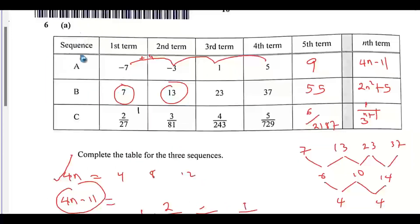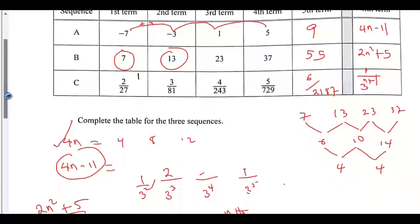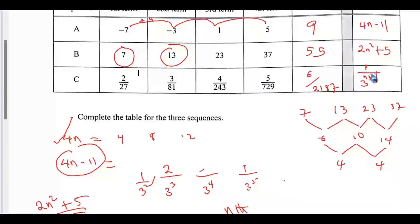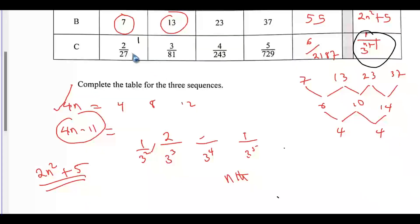Question 6A. We are giving three sequences: Sequence A, Sequence B and Sequence C respectively. The nth term is wrong here because I unconsciously changed the question. I had the first term to be 1 over 9, whereas we don't have it there. That led to the error. The first term here is 2 over 27.